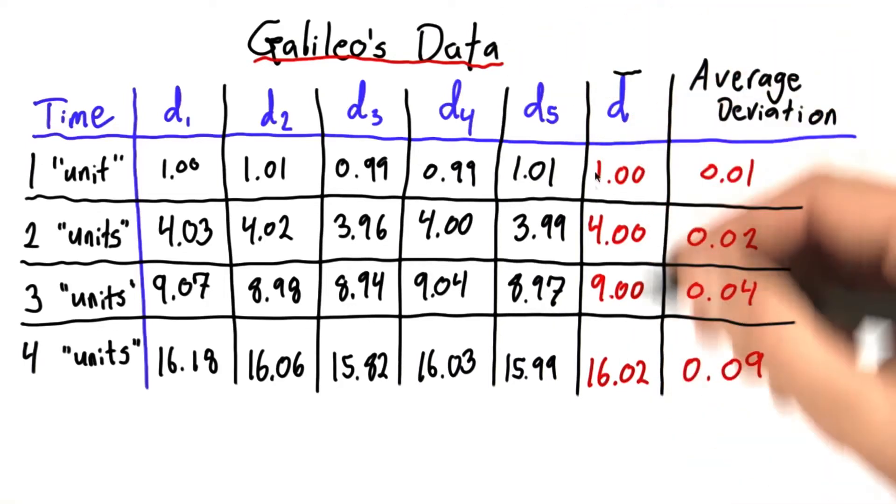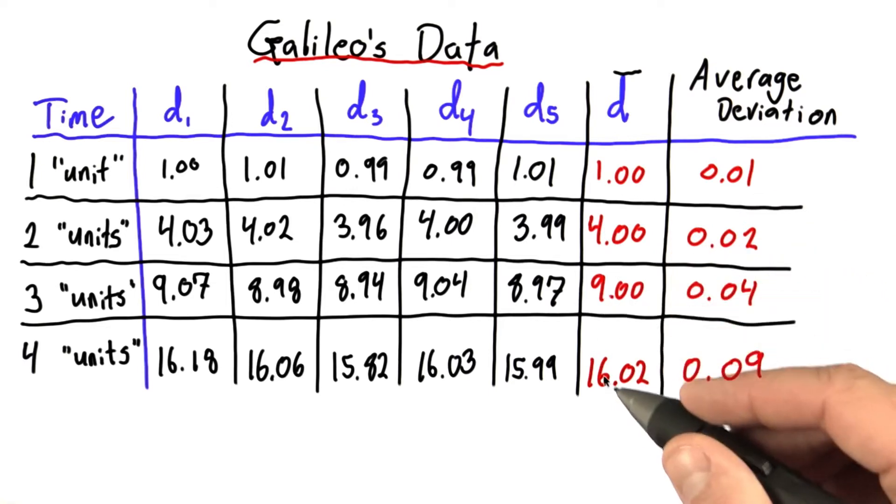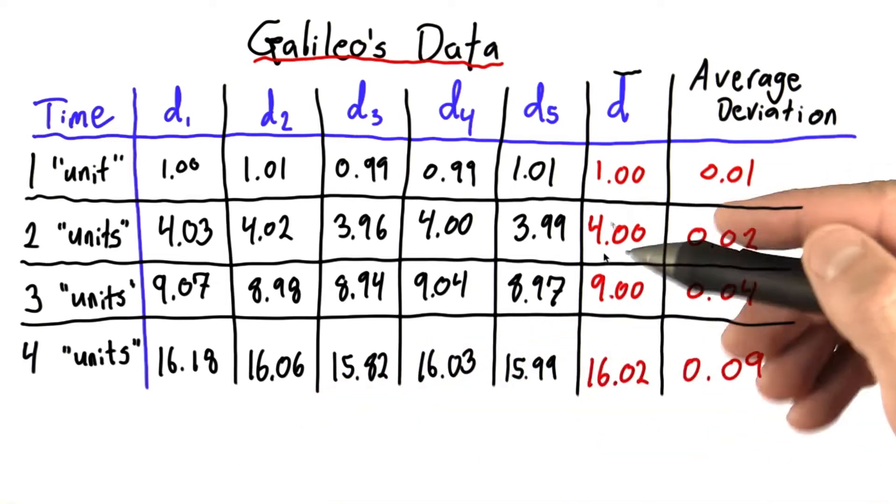Now when we look back at Galileo's data, we had this pattern that we wanted to see emerging: 1, 4, 9, 16. These seem to be squares, perfect squares.